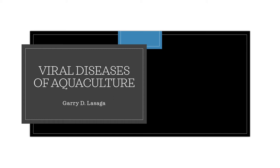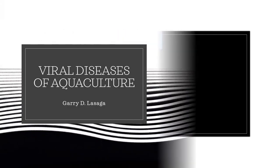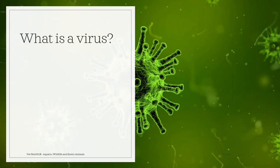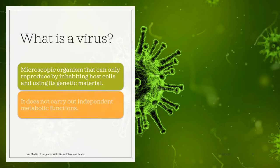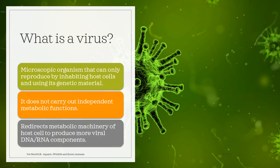I'm now going to present the viral diseases of aquaculture. Before we discuss the different viral diseases of aquaculture, let us first define what is a virus. A virus is a microscopic organism that can only reproduce by inhabiting host cells and using its genetic material. It does not carry out independent metabolic functions, and it redirects the metabolic machinery of the host cell to produce more viral DNA or RNA components.